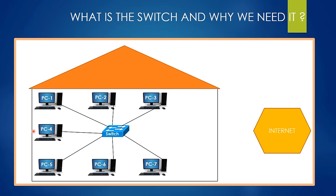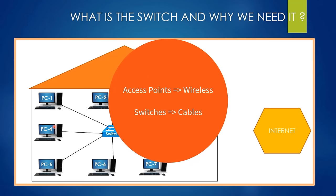There are seven computers in this environment. We can connect them using switches and cables, just like you see in the picture. Or in the same way, we can use an access point device instead. If you use an access point, it uses wireless technology instead of cables while communicating with devices. In summary, both the switch and access point enable these seven computers to communicate — one uses cable, the other uses wireless technology.